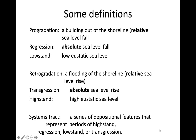Progradation goes hand-in-hand with regression. A low stand is a low eustatic sea level fall, moving toward progradation. Retrogradation is a flooding of the shoreline — the shoreline actually retreats toward land. That goes hand-in-hand with a transgression, and a high stand is going to be a high eustatic sea level.